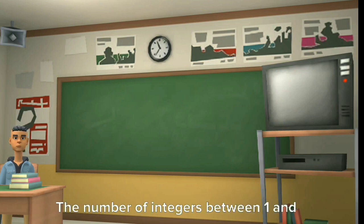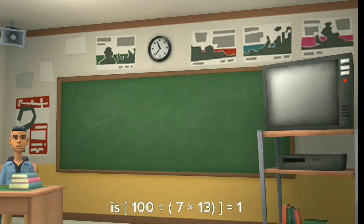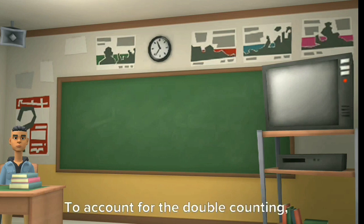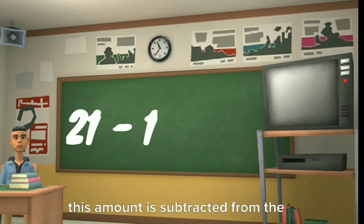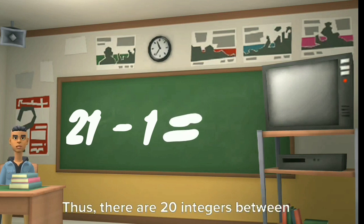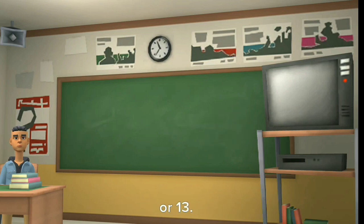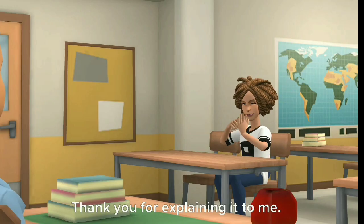The number of integers between 1 and 100 divisible by both 7 and 13 is 100 divided by (7 times 13), which equals 1. To account for double counting, this amount is subtracted from 21, giving us 20 integers between 1 and 100 that are divisible by 7 or 13.